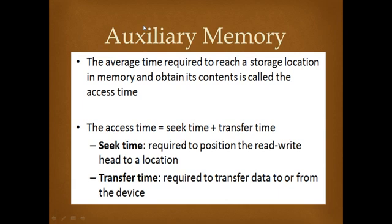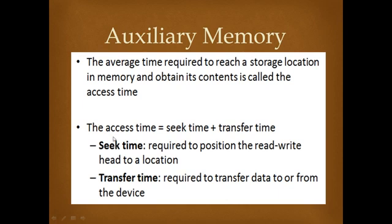In auxiliary memory we are interested in access time. Access time is the time required to reach the storage location in memory and obtain its contents. For example, when you click on the C drive, the data appears on screen — the time taken to access that data is the access time. Similarly, when you open a file like x.doc from the C or D drive, the time taken is the access time.